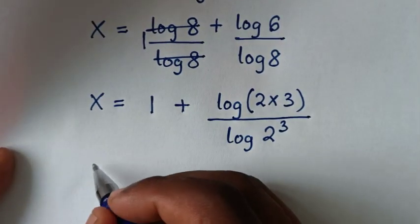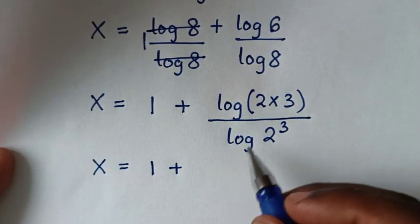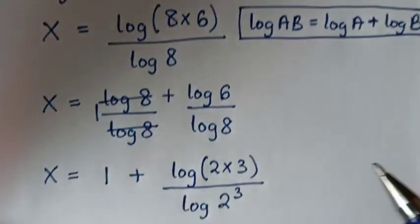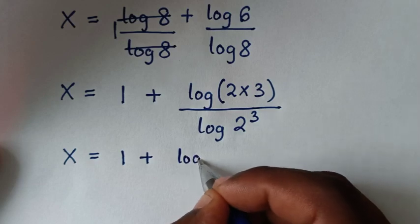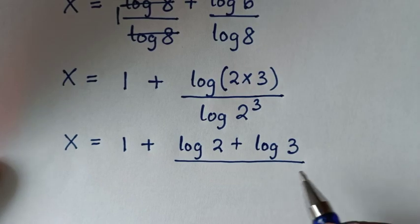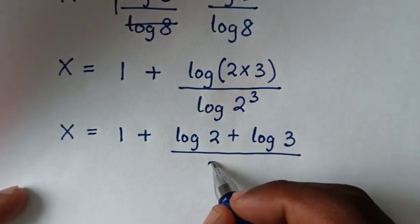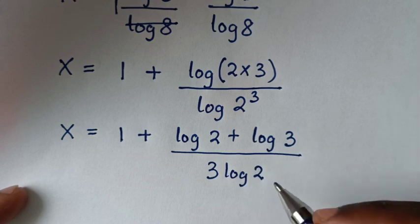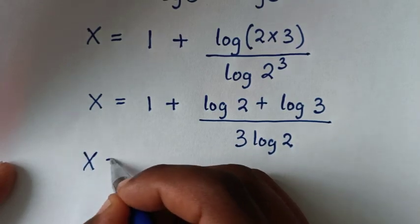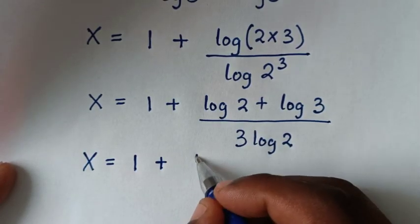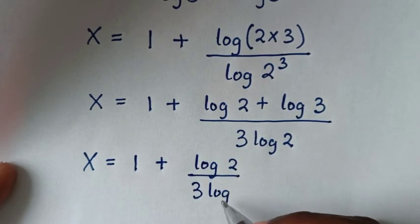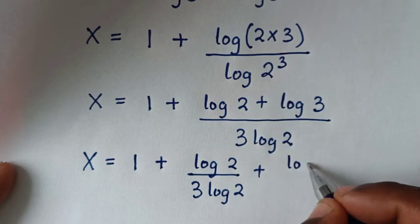In the next step, x equals 1 plus log of (2 times 3) over log of 2 to the power 3. We apply the product rule: log of (2 times 3) becomes log of 2 plus log of 3. Then 3 times log of 2 goes in the denominator for both parts, giving x equals 1 plus log of 2 over 3 log of 2, plus log of 3 over 3 log of 2.